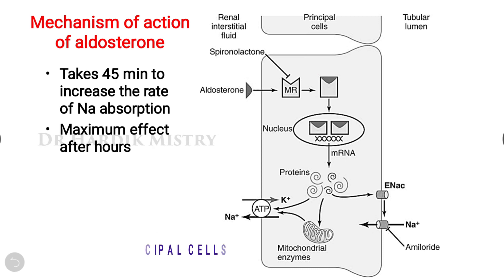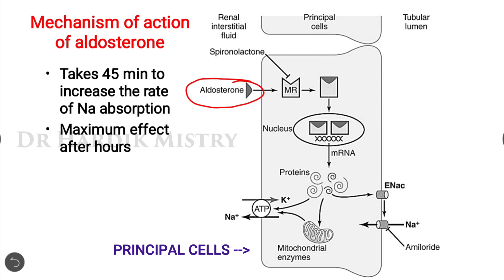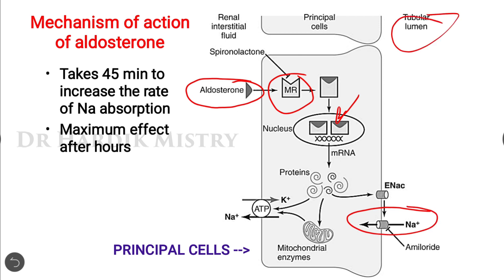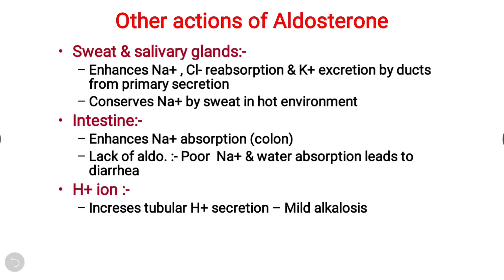The mechanism of action of aldosterone takes 45 minutes to increase sodium absorption. Aldosterone binds with its receptor; the receptor-aldosterone complex enters the nucleus, stimulating protein transcription and translation. This leads to synthesis of sodium channels — increasing sodium absorption from the tubular lumen — and increased sodium-potassium pump activity, pumping sodium into the renal interstitial fluid and ultimately into the blood.